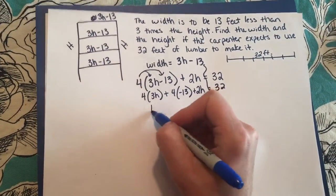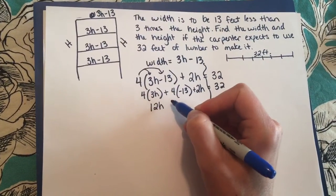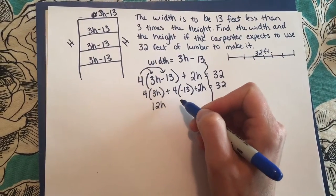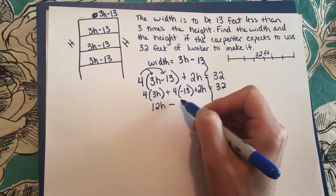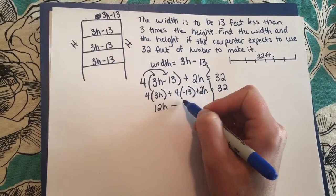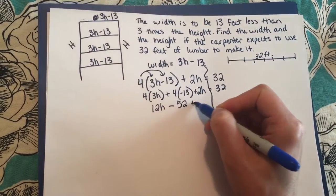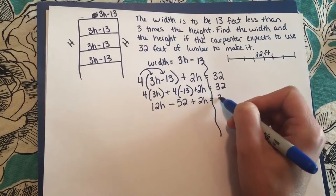Okay, 4 times 3h is 12h. A positive 4 times a negative 13 is going to give me a negative 52 plus 2h equals 32.